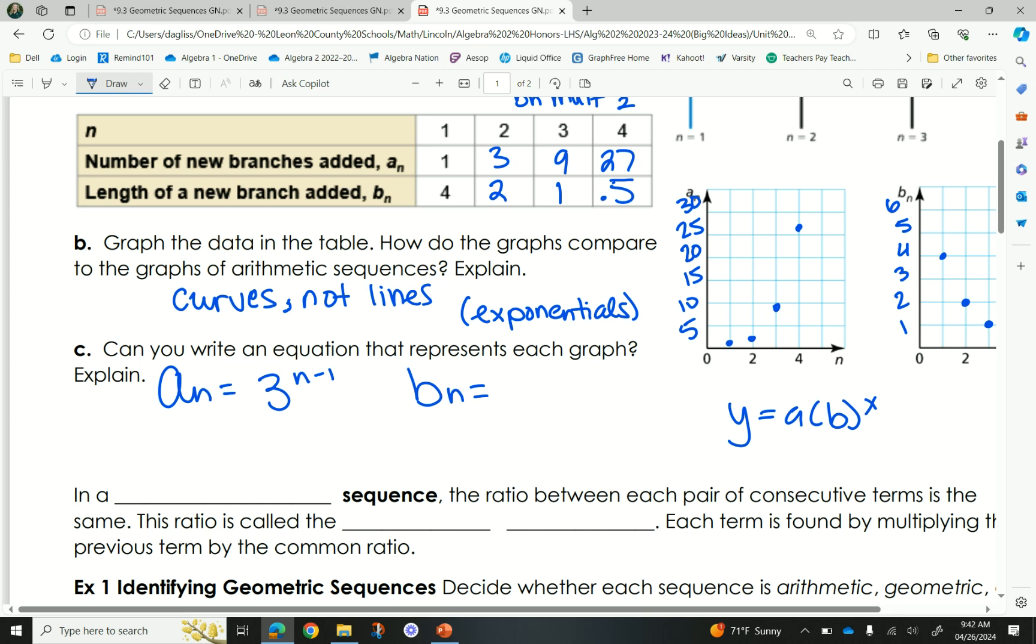Hold on. But we don't do negative exponents. Evan, do you have something? n minus 3? Okay. We're getting closer. Do you all remember what the a and b values represented in exponentials? What was your a value? Where do you start at? Okay. So, where does b start? It starts at 4. Right? And then what is our ratio or our growth factor or decay factor? 1 half.